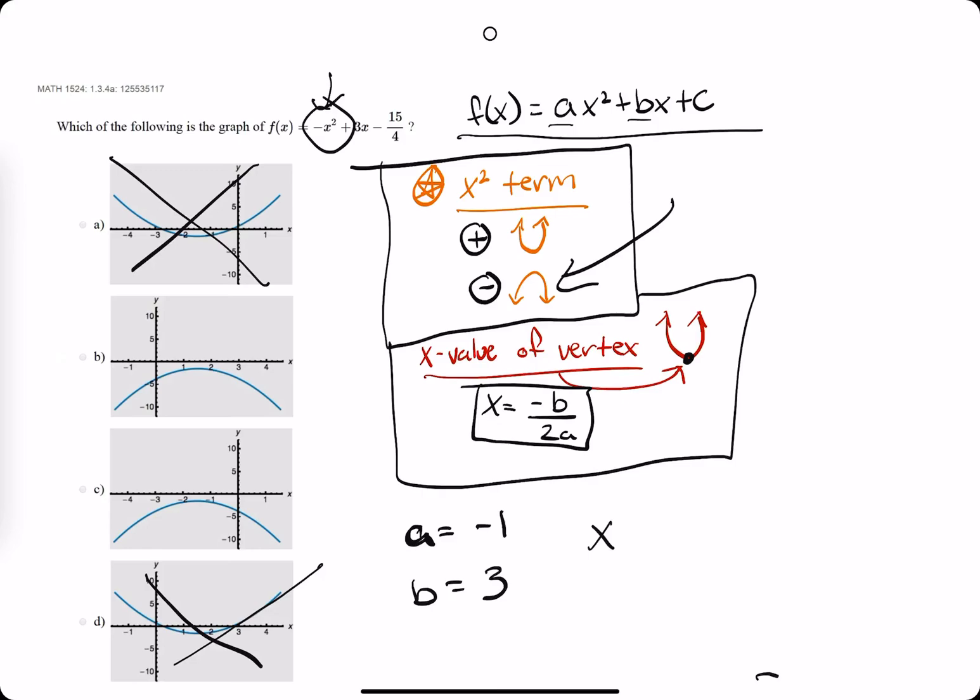So for calculating negative b over 2a, we say negative b, which is 3, over 2 times a, which is negative 1. We get negative 3 over negative 2,